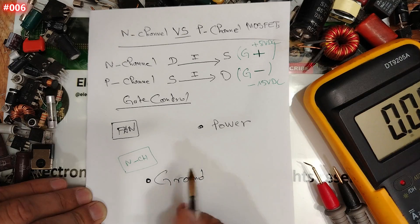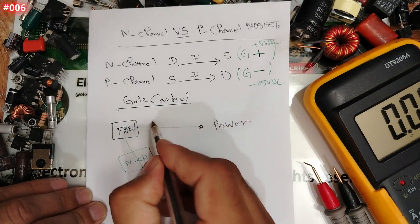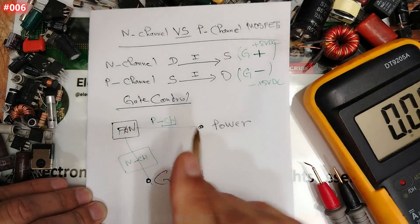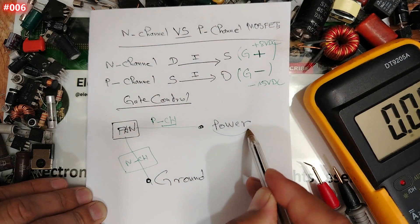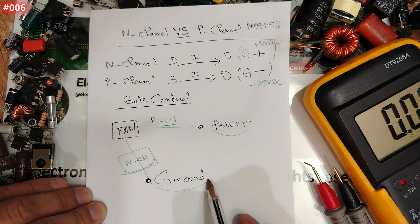So between fan and ground, we use what? We use N-channel MOSFET. And between the fan and power, we use what? We use P-channel MOSFET. So P-channel is used when it comes to power, and N-channel is used when it comes to ground.